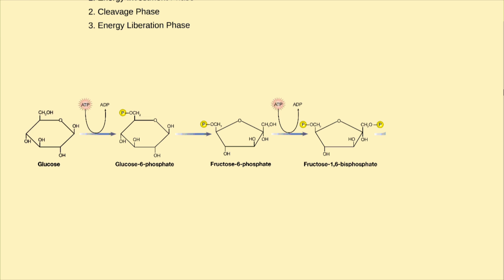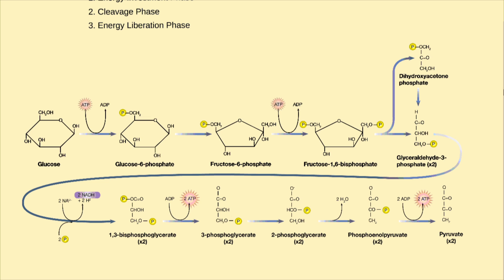In the cleavage phase, fructose 1,6-bisphosphate is split into two G3P molecules, which prepares it for the energy liberation phase. In the energy liberation phase, G3P is converted to pyruvate, releasing one NADH and two ATP. This ATP is formed via substrate-level phosphorylation.